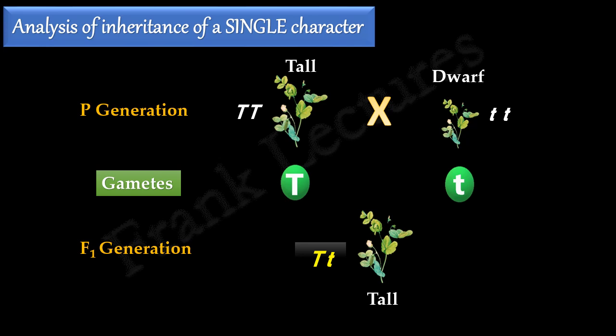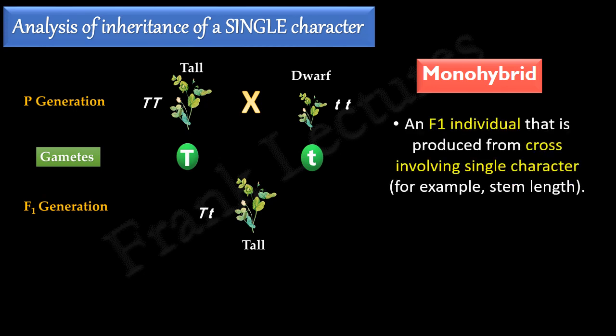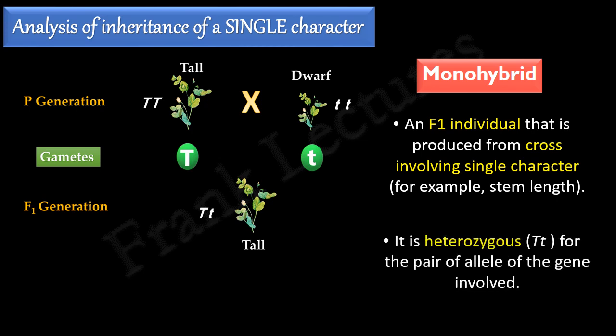Each tall plant in F1 generation is known as monohybrid. Monohybrid refers to the F1 individual that is produced from a cross involving single character, and it is heterozygous for the pair of alleles of the gene involved.